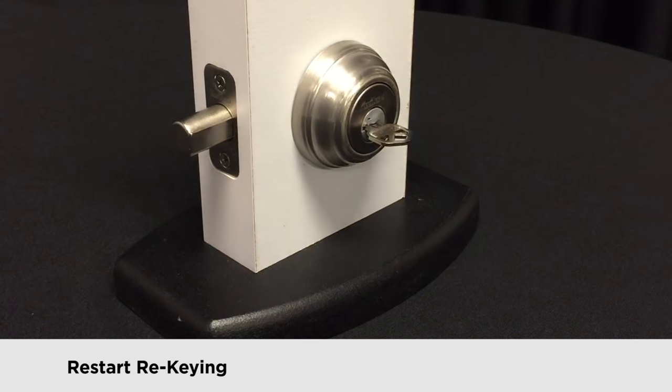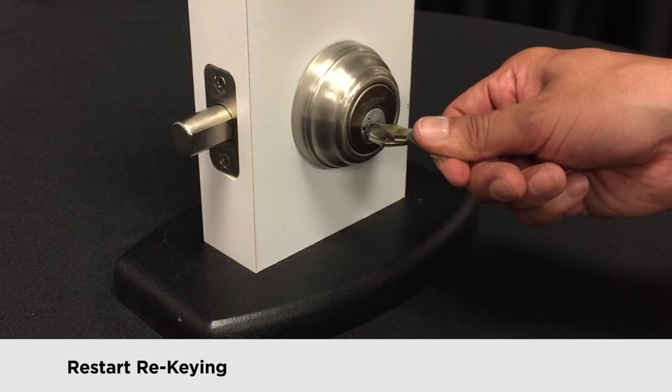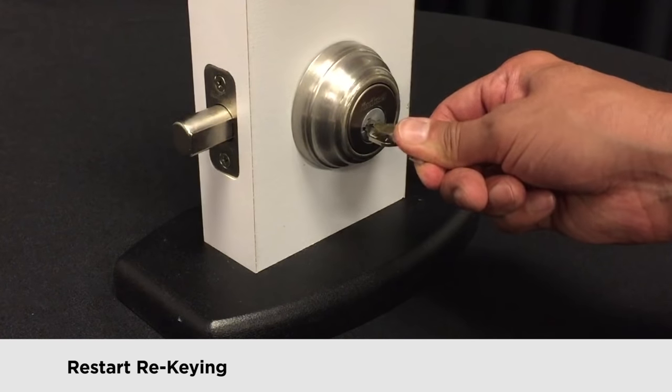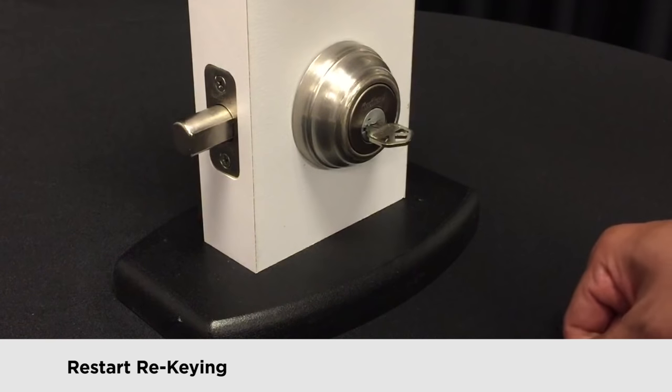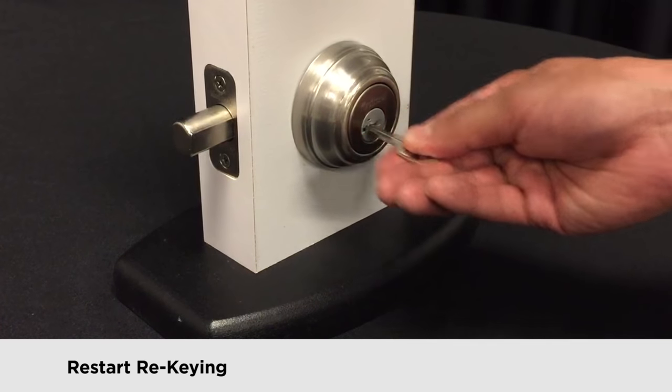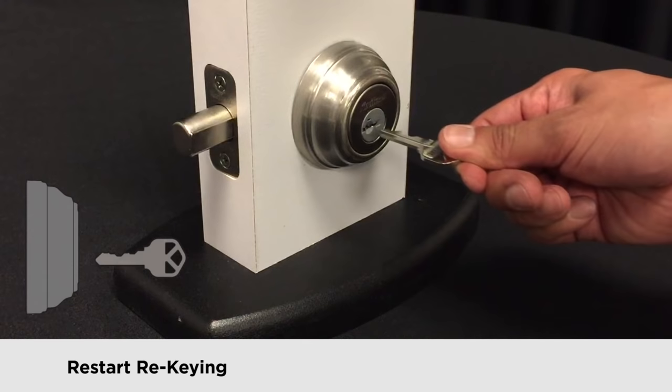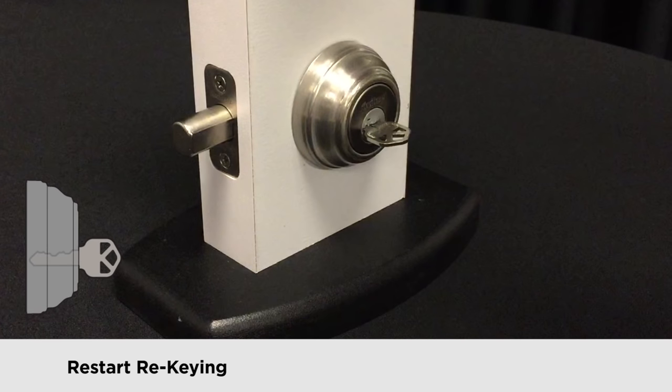You're basically going to restart the rekeying process. Fully insert the smart key tool into the slot and then remove it. Then remove the key. Reinsert the key, or whatever key you want the cylinder to work with, and make sure you fully insert it so that there's no gap between the key and the cylinder.